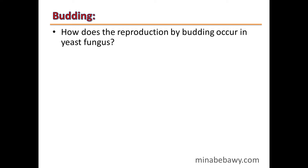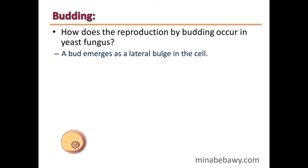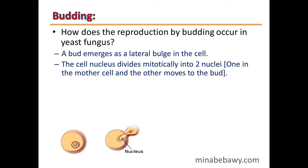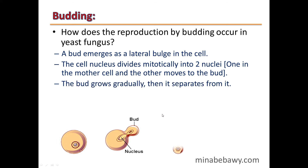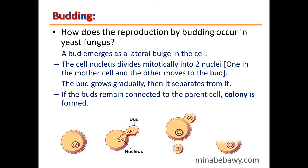How does reproduction by budding occur in yeast fungus? A bud emerges as a lateral bulge in the cell. The cell nucleus then divides mitotically into two nuclei — one remains in the mother cell and the other migrates to the bud. The bud grows gradually, then separates from the mother cell.